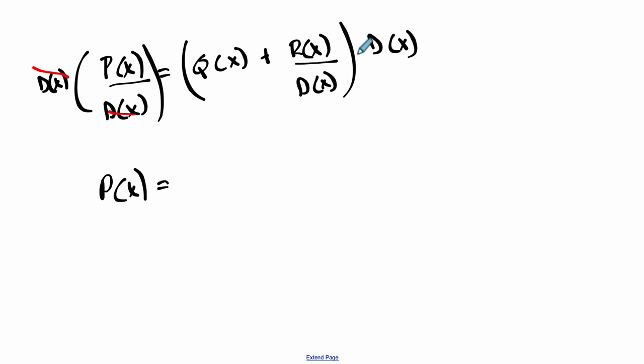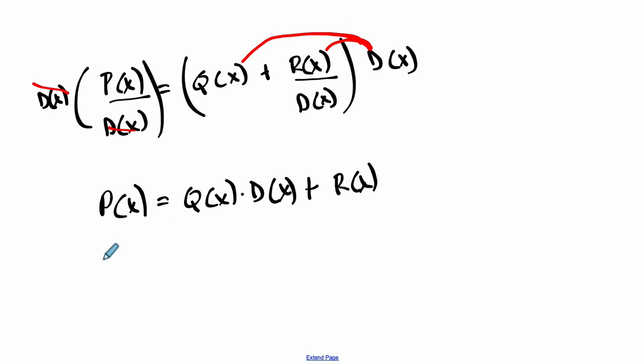On the right-hand side, we would distribute d of x to both terms. It cancels in the second term, but in the first term, you would have q of x times d of x plus the remainder.